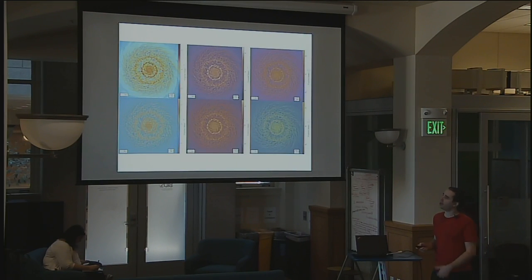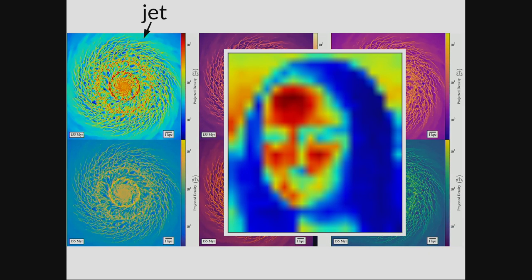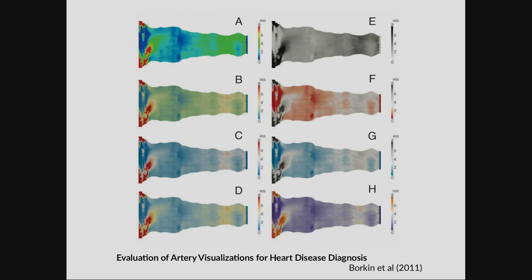Not all color maps are created equal. The one in the upper left is called Jet — it's the current Matplotlib default and used to be the MATLAB default for many years. It's mostly famous for how much it distorts data. There's literally dozens of papers about why you should never use Jet. Burkin et al. did a user study where doctors used this tool to look at imaging results on arteries to determine if patients have heart disease, using a rainbow jet-style color map as the default.